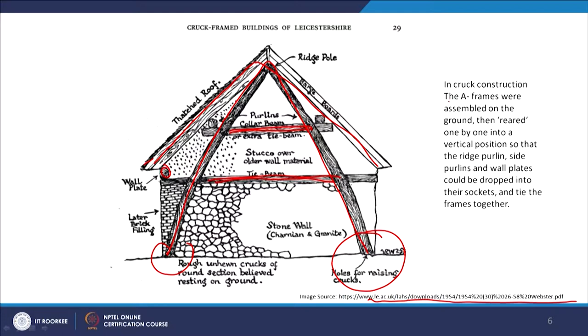The A frames were assembled on the ground, then reared one by one into a vertical position. The ridge purlins, side purlins, and wall plates could then be dropped into their sockets to tie the frames together. Once raised, the tie actually binds everything together, and the load distributes from the inclined members.